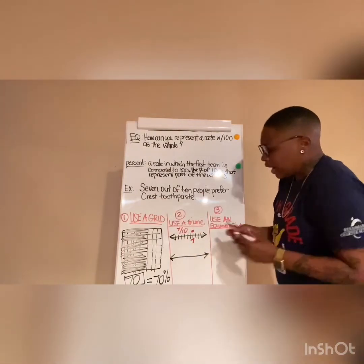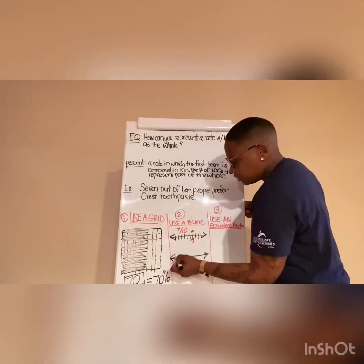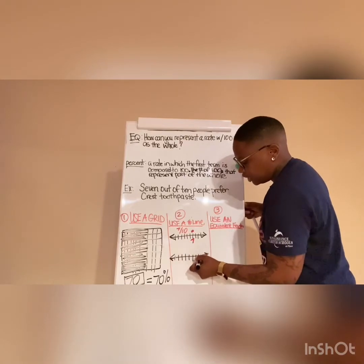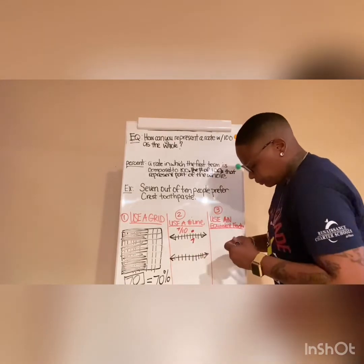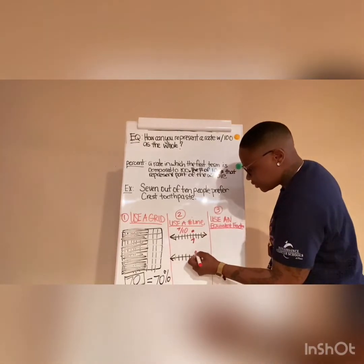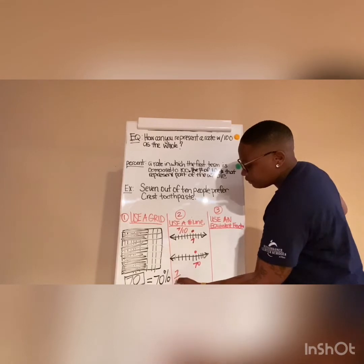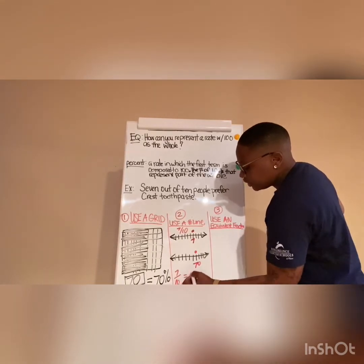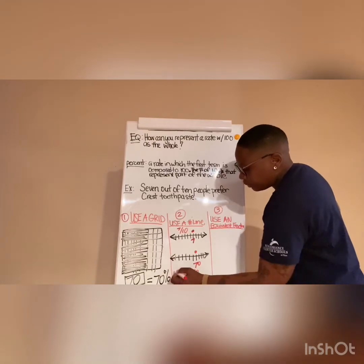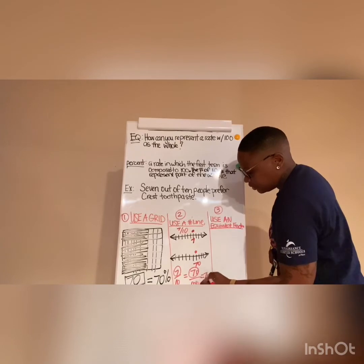On the bottom number line, I'm going to do it out of 100: 10, 20, 30, 40, 50, 60, 70, 80, 90, 100. As you can see, it is still the same thing. So 7 out of 10 is really saying 70 out of 100. So our percent is still 70 percent.